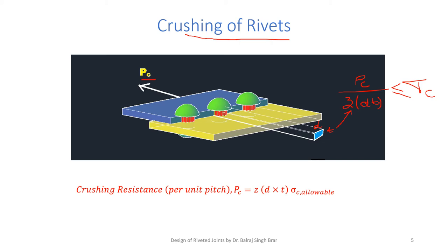This crushing stress should be less than the allowable crushing stress or strength for the rivet material. In this case, σc for rivets is less than σc for plates, but usually the materials are the same in design. For the rivet case, crushing resistance is: Pc = z · d · t · σc.